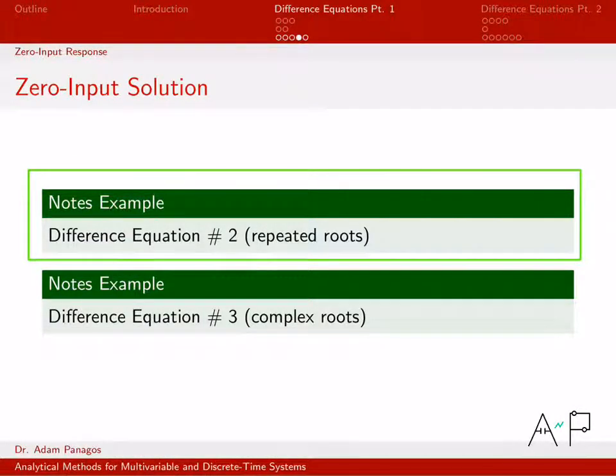In the previous video we solved a difference equation for the zero input response and that difference equation had distinct roots. In this video we're going to do something very similar - we're still looking at solving a difference equation for the zero input response, but in the example we'll work here the characteristic equation of the system has repeated roots.